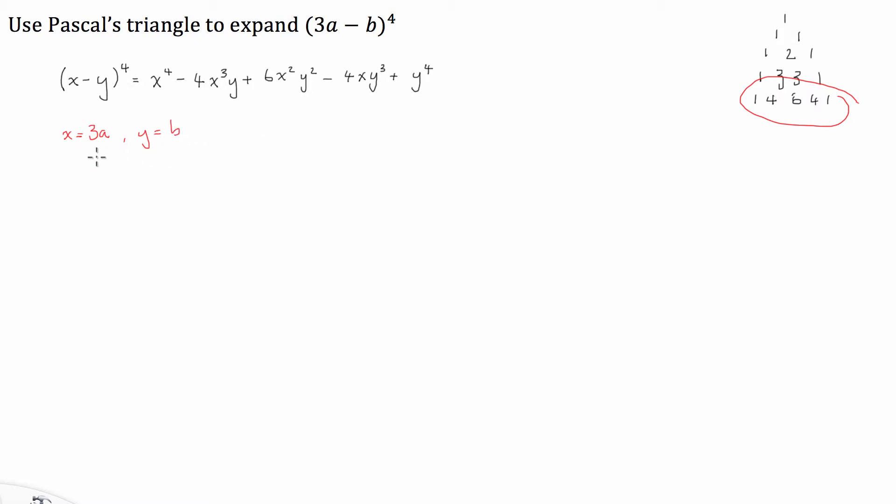So what we're going to do is substitute 3a and b into this form that we have here. So we're going to have 3a to the power of 4 minus 4 times 3a to the power of 3 times b, plus 6 times 3a to the power of 2 times b to the power of 2 minus 4 times 3a to the power of 1 times b to the power of 3 plus b to the power of 4.